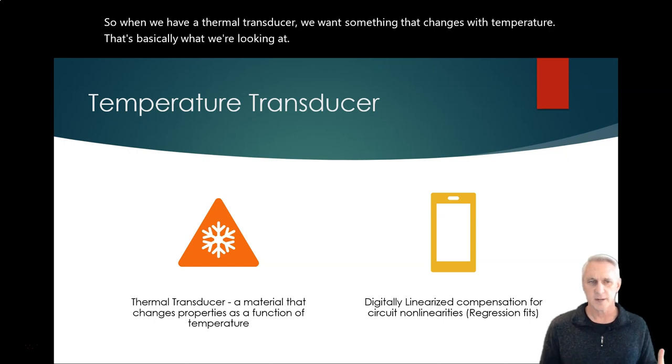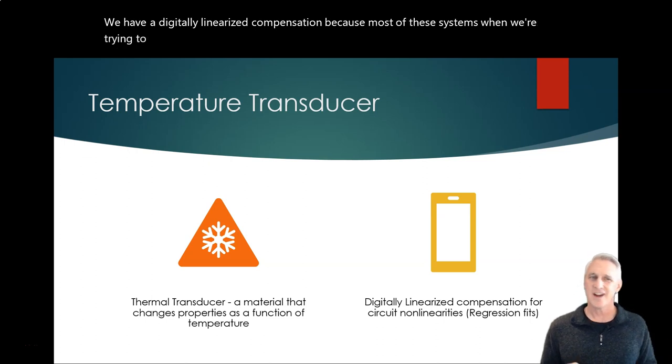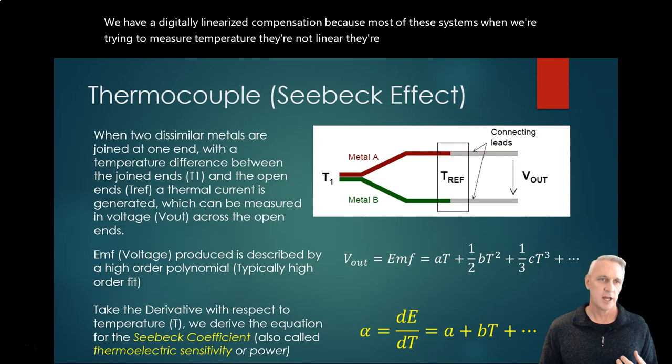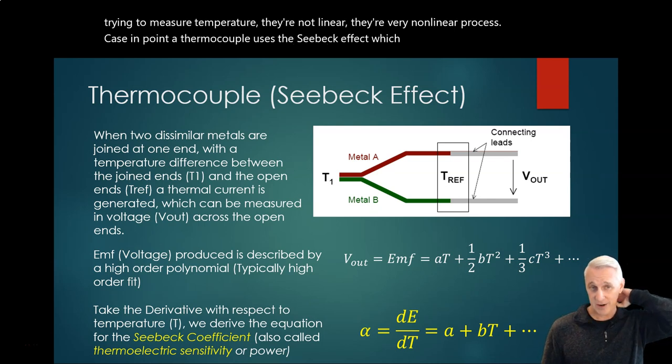We have digitally linearized compensation because most of these systems when we're trying to measure temperature are not linear - they're very nonlinear processes. Case in point, a thermocouple uses the Seebeck effect, which is a very cool effect.